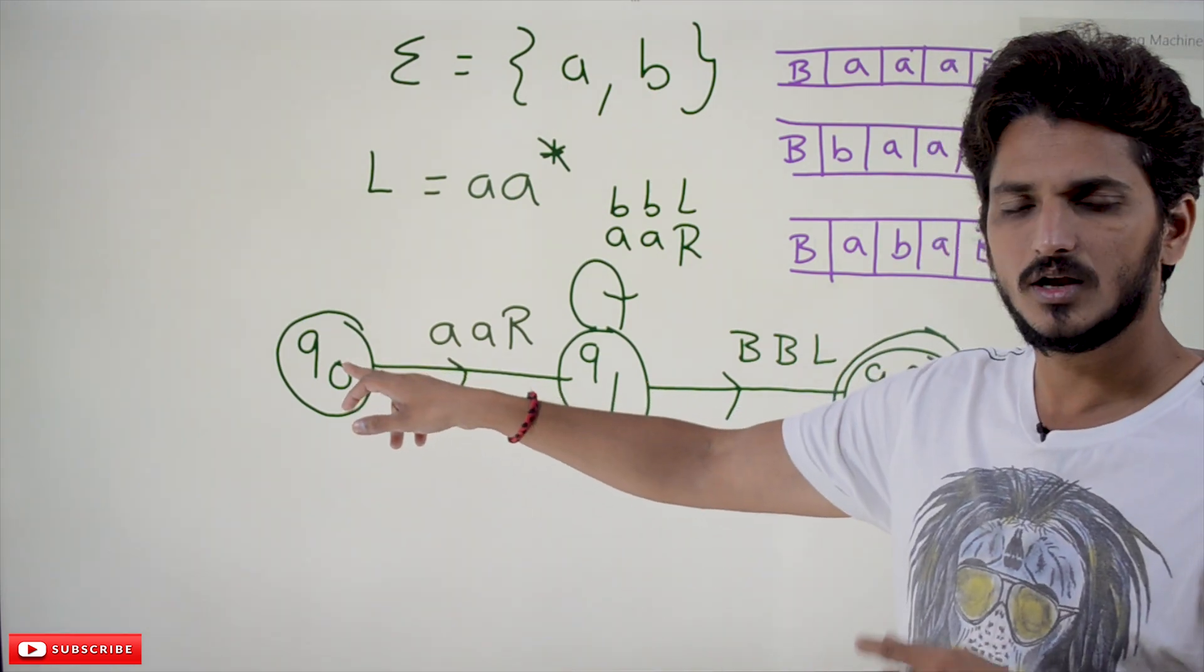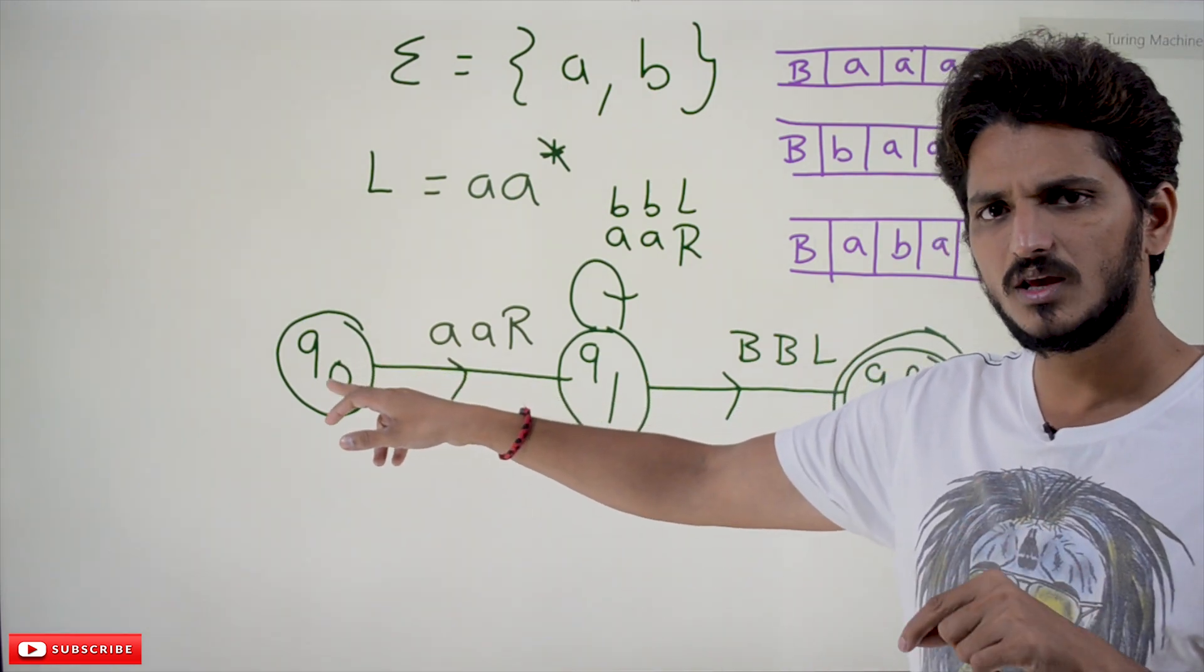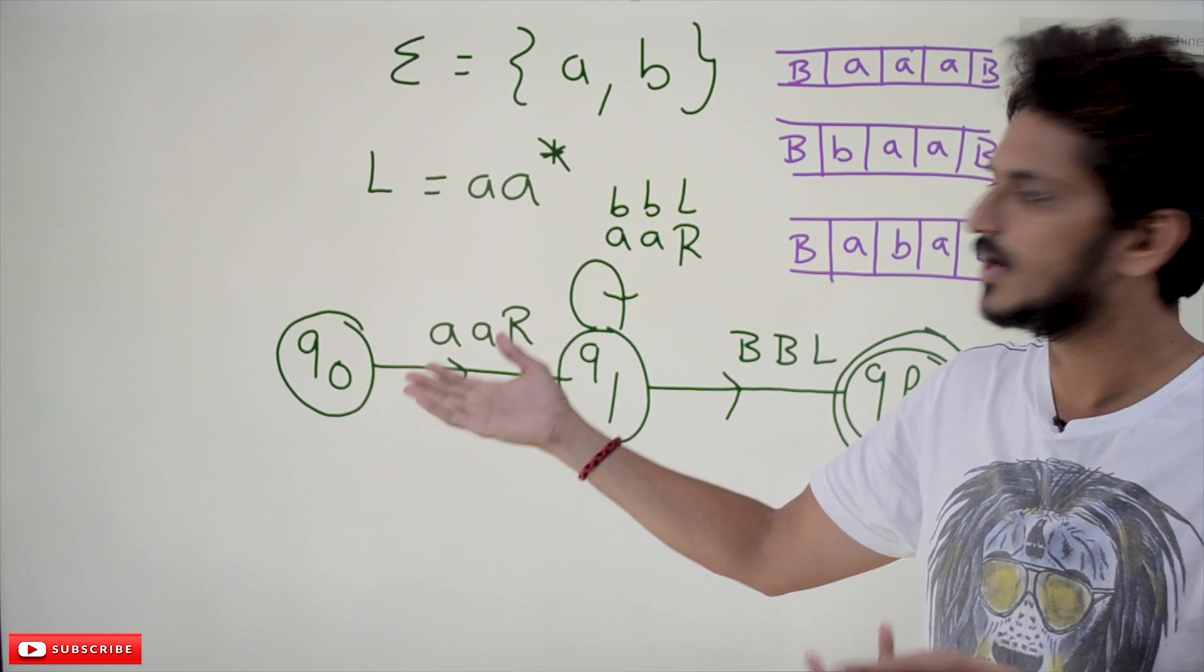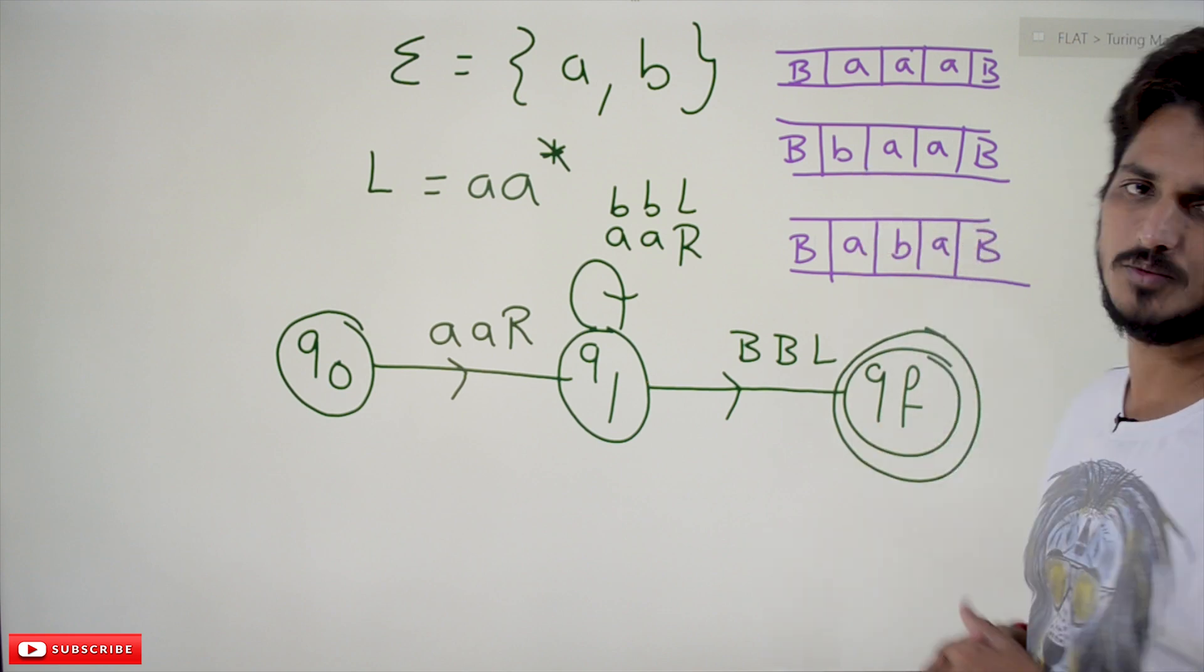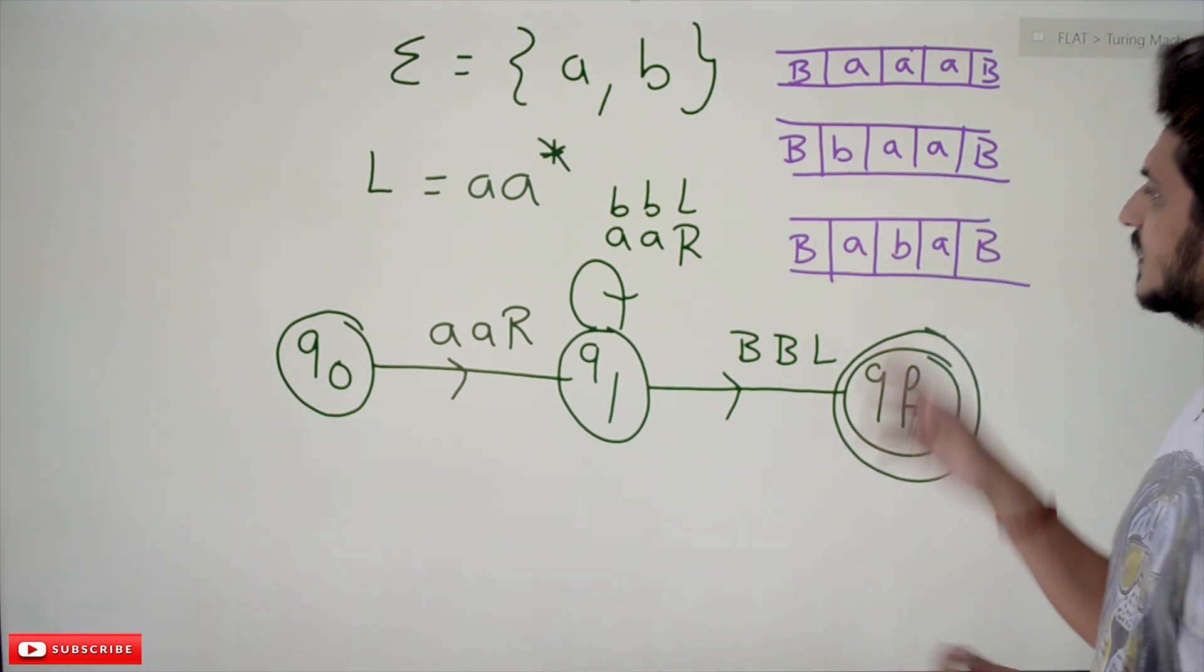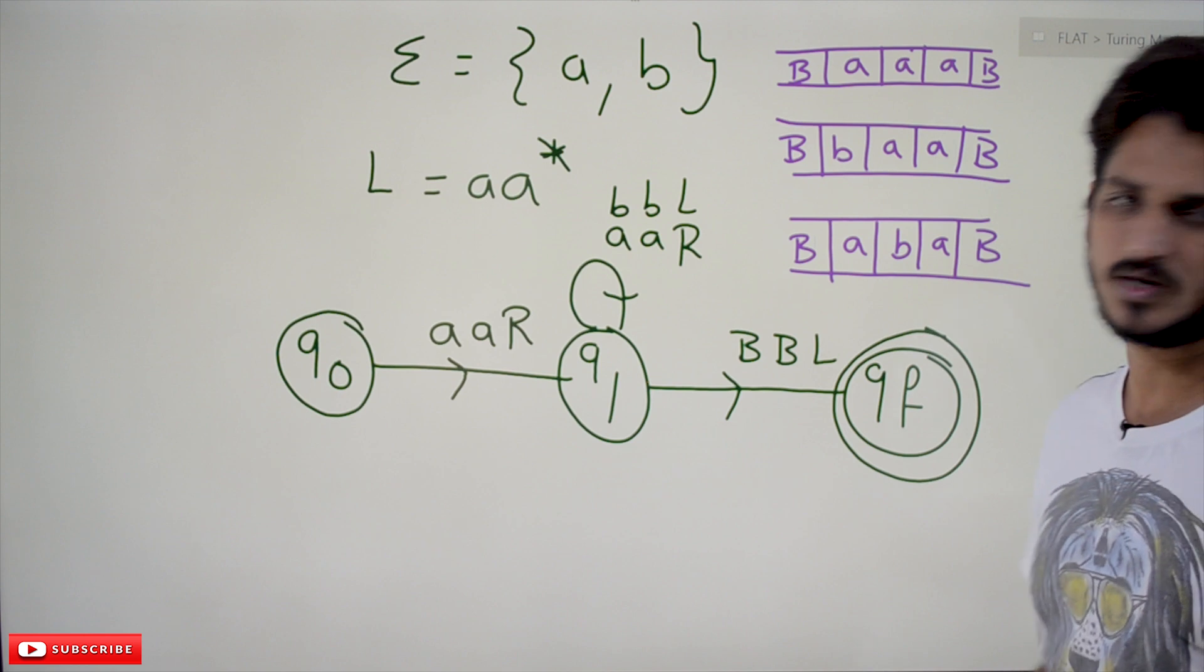On Q0, did we mention anything about B? No. Our Turing Machine is going to stop. It is going to reject the input string B A A. Let's check the third one A B A. What happens here?